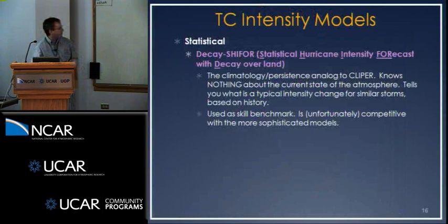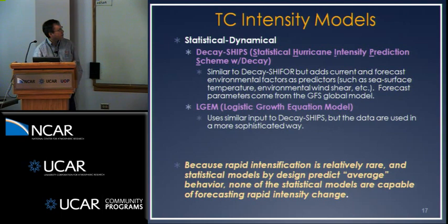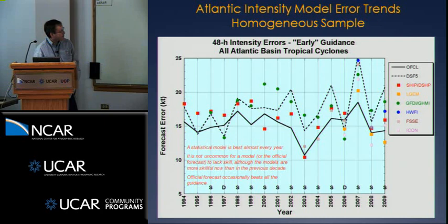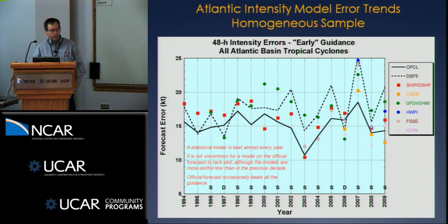Just a couple words about intensity — same hierarchy of models. Statistical models for intensity: Decay SHIPPER is again just what's normal, doesn't know anything about what's going on in the atmosphere. We have two statistical-dynamical models: Decay SHIPS and LGEM. Then we have our dynamical models — global models don't have the resolution to help, but regional models do. In the skill diagram, here's the Decay SHIPPER baseline. Notice there's much less skill in intensity forecasting — there are years where the official forecast doesn't have skill, and many years where many of the models don't have skill either.